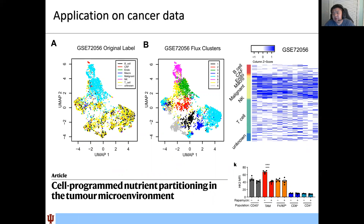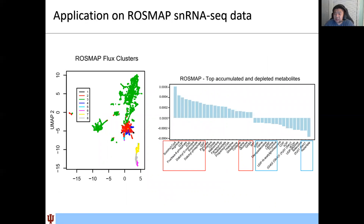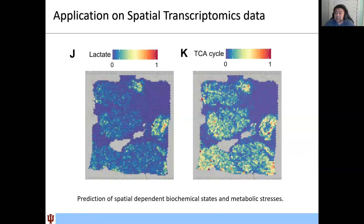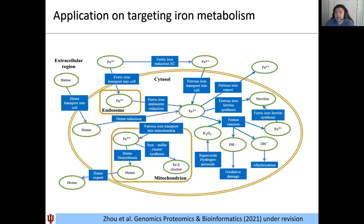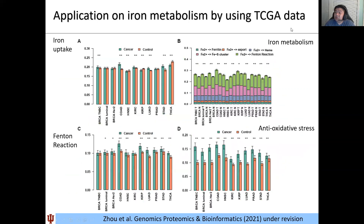At the application level, we applied SCFEA to cancer data and successfully identified cell-type-specific metabolic variations, consistent with recently published works, including one finding that cancer-associated macrophages have similar metabolic rates as cancer cells, which we confirmed in some cancer types. We also applied it to single-nucleus sequencing data and found significant accumulation or depletion of metabolites in Alzheimer's disease, consistent with reported literature, and identified new possible targets. We demonstrated the method can also be applied to spatial transcriptomic data, small systems like iron-ion metabolism, and large-scale tissue data such as TCGA, generating meaningful results.